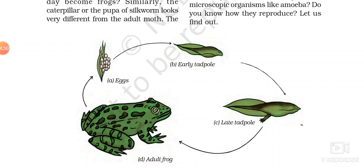After their hatching, new small tadpoles come out. Now see the structure of a tadpole — does it resemble a frog? No, it does not resemble a frog. Why? Because tadpoles have fins; they have to live in water. The growth of the frog takes place inside water, so they need fins to swim. They also have gills to breathe — they do not have lungs, but they have gills.